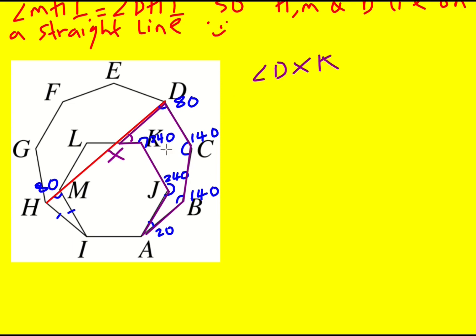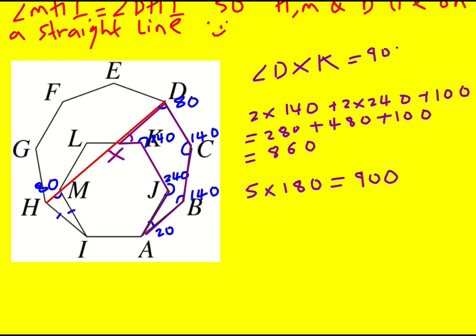Right, well I know I'm going to add all the angles up actually. So I've got two times 140 plus two times 240. And then I've got this 20 and the 80 so I've got 100. And that's going to be 280 plus 480 plus 100 which is 760, 860. For my heptagon it's going to be 5 times 180 which is actually 900. So angle DXK is going to equal 900 minus 860 which is 40 degrees.